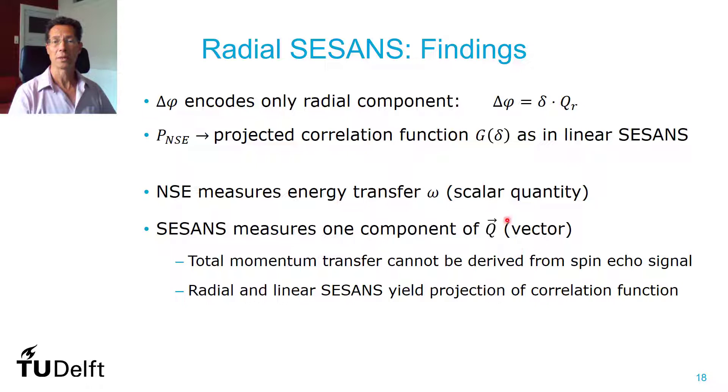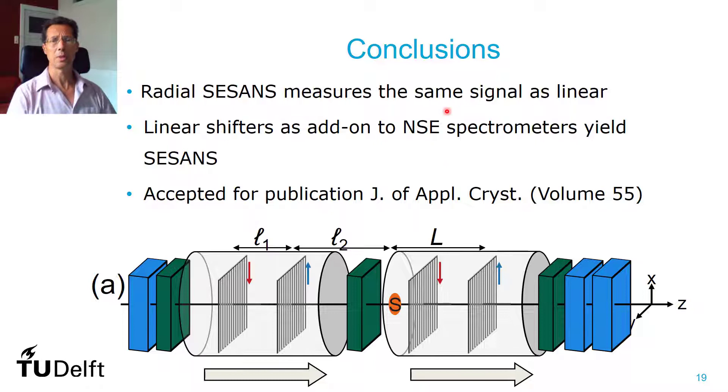Now, what can we conclude from this? There's no difference between the two methods in the signal you get. But on the other hand, it would be very interesting to use these linear shifters as an add-on to neutron spin echo spectrometers to yield SESANS. The properties of these instruments are very different from the dedicated SESANS instruments.